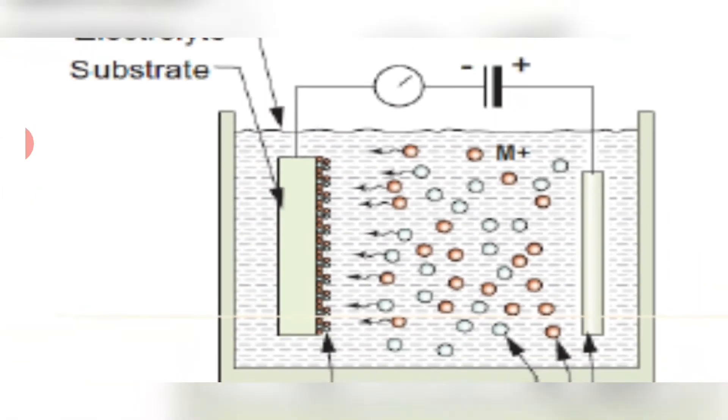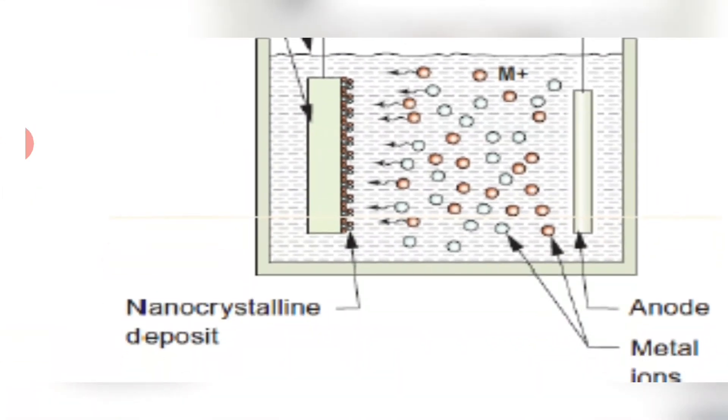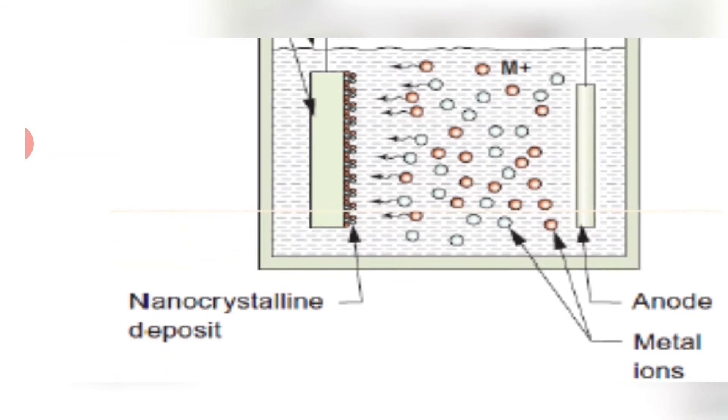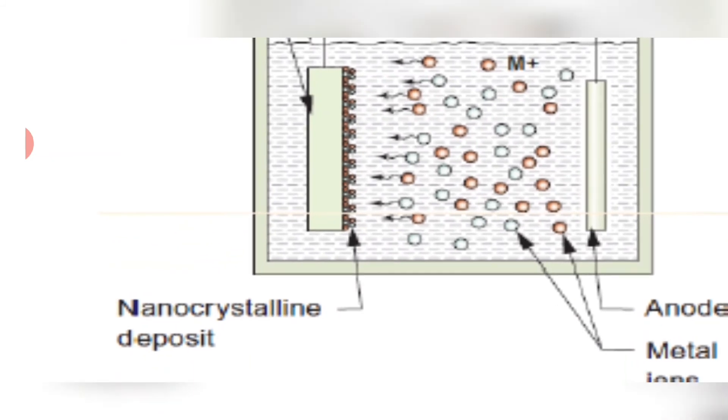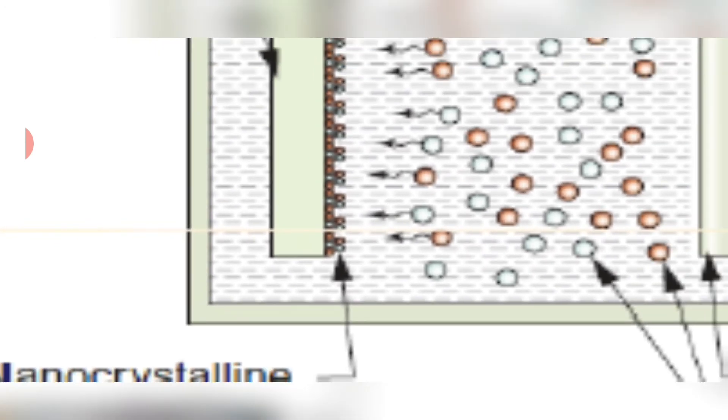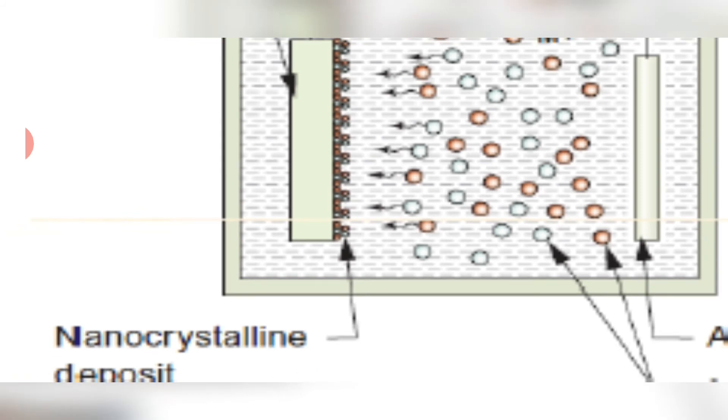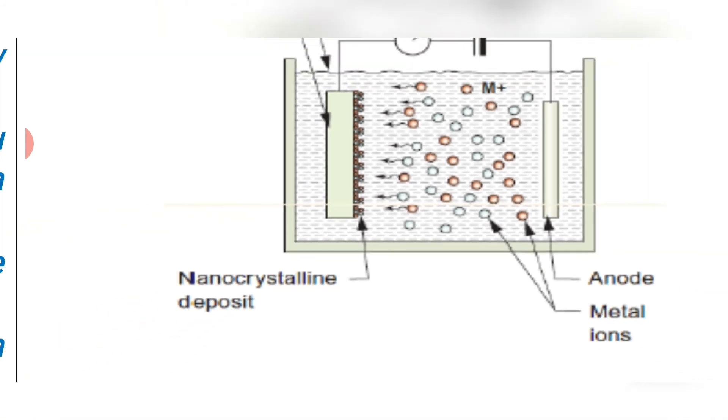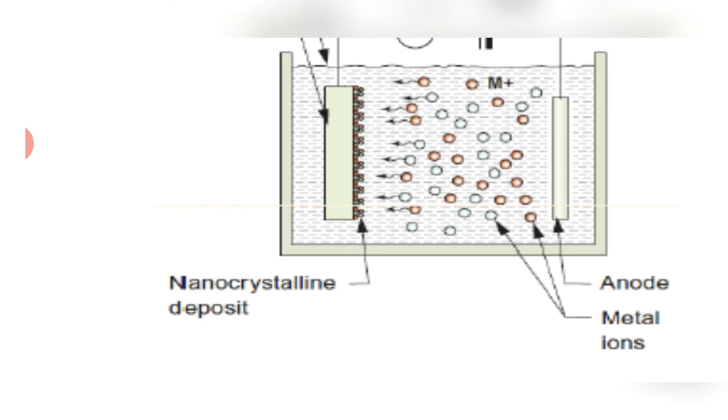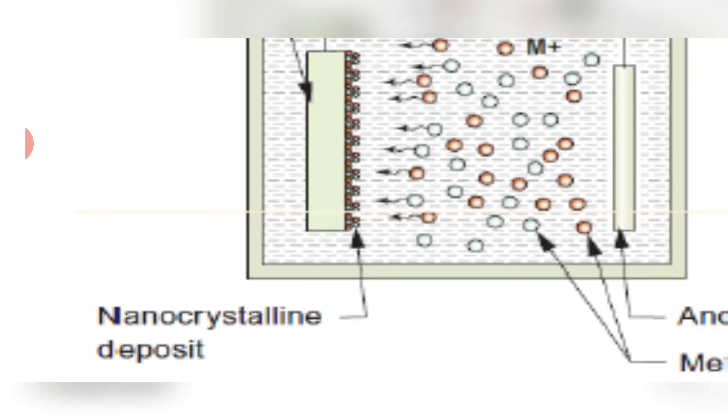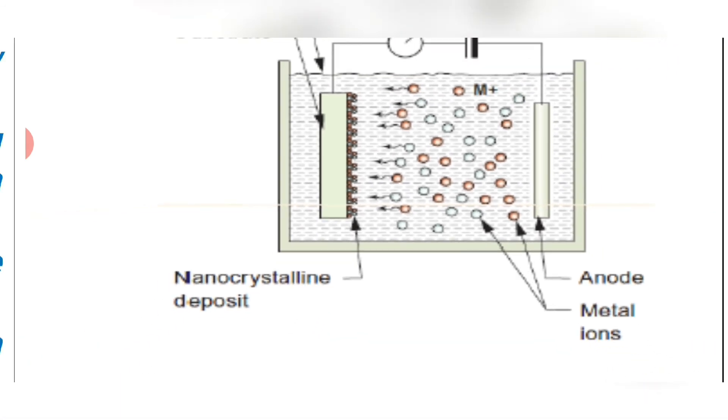By applying current, nanocrystalline structured copper is deposited at the cathode. So this is the cathode. The layer deposited in this cathode is 2 millimeter thickness, and the grain size of this particle is 27 nanometer.